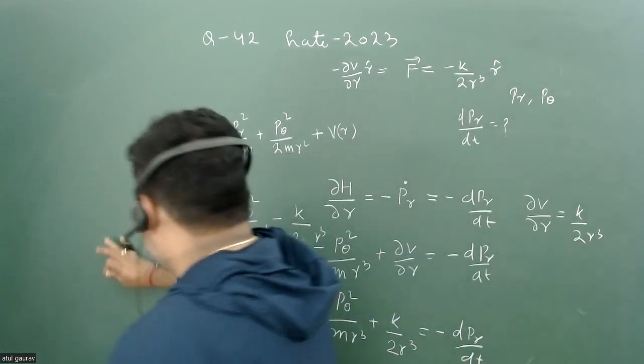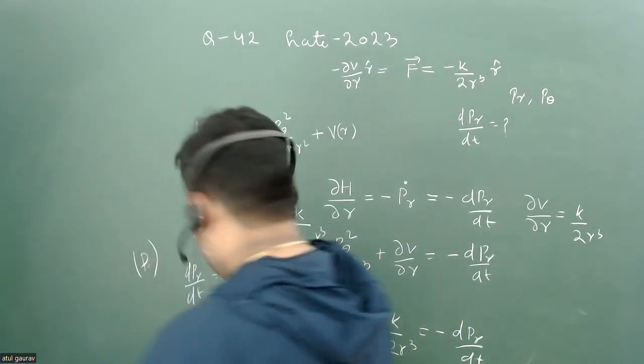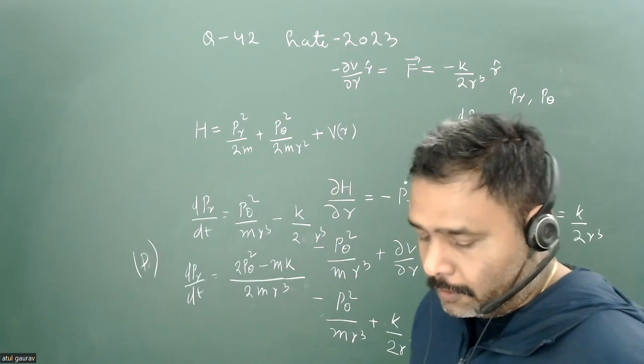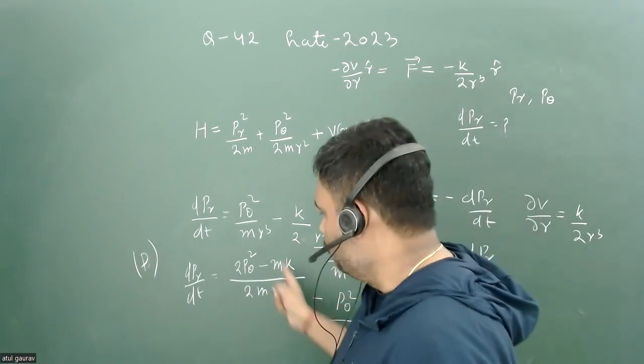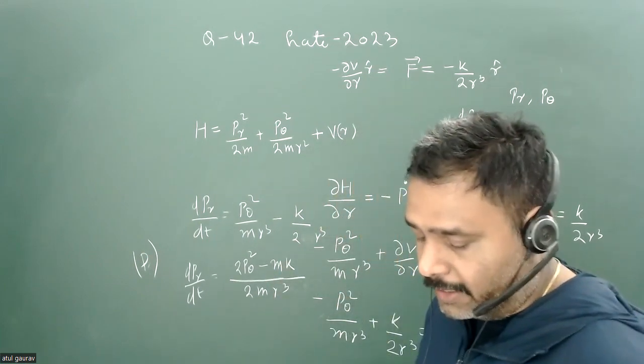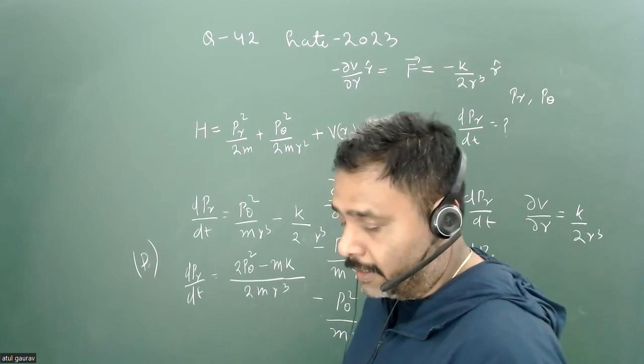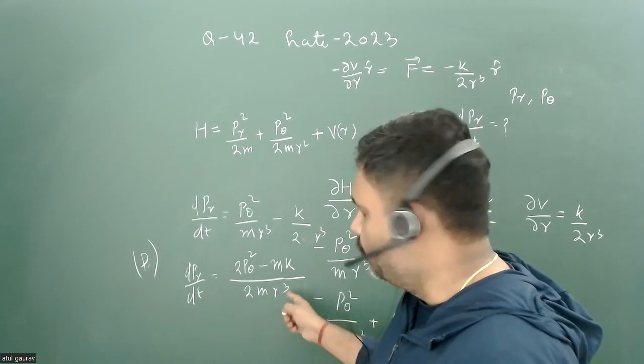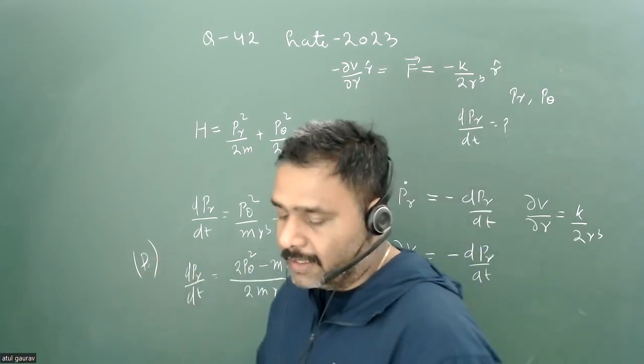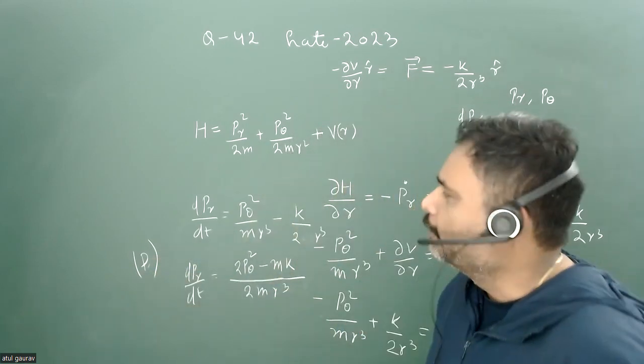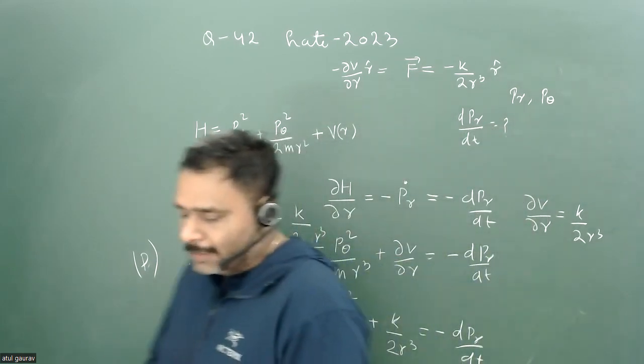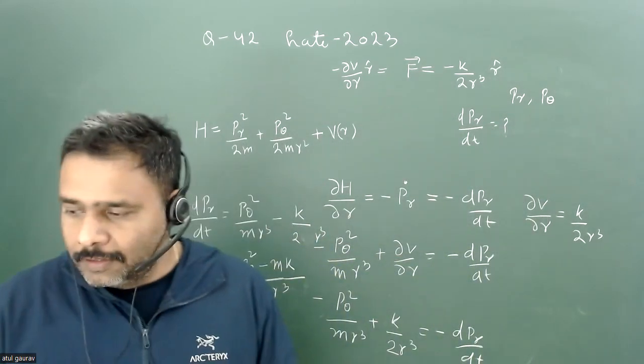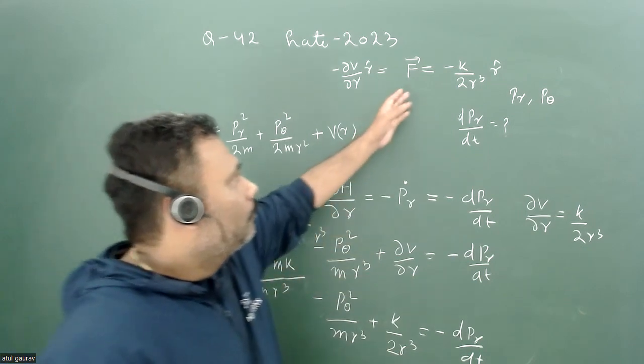Sorry, option D is correct because 2 is there. You have to just check which answer is matching here. If I'm saying 2p_theta² minus mk and in the denominator you have 2mr³, yes, option D is correct. You have to do this calculation very easily in the examination.